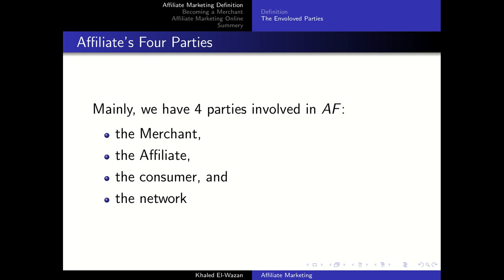The second party is the affiliate, sometimes also known as the publisher. Affiliates can range from single individuals to entire companies. An affiliate promotes one or multiple affiliate products and tries to attract and convince potential customers of the value of the merchant's product so that they actually end up buying it. Third is the consumer — the consumer makes the affiliate system go round. Without sales, there aren't any commissions to hand out and no revenue to be shared.